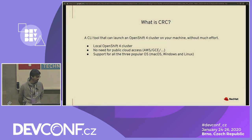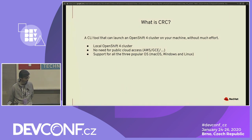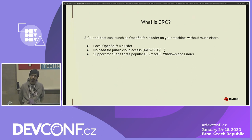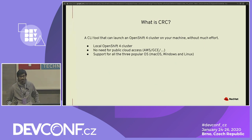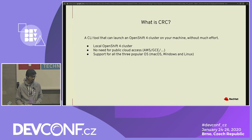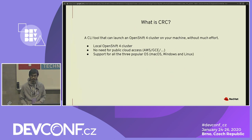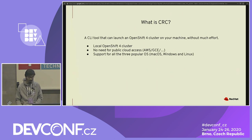What is CRC? CodeReady Containers is a local OpenShift cluster. Earlier we had Minishift, but it only worked for OpenShift version 3.x. Then OpenShift changed the architecture and moved to an operator-based self-managing cluster. So we needed to build this new tool to have a local cluster on the developer's machine so they can try and test out their code as it would work in a cluster.